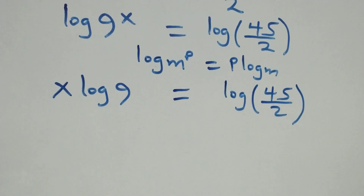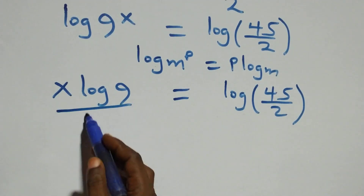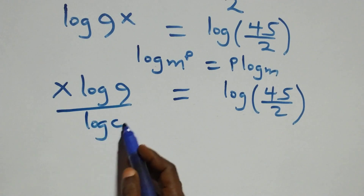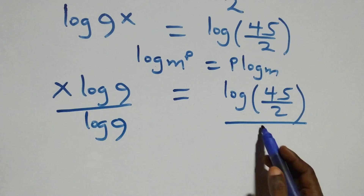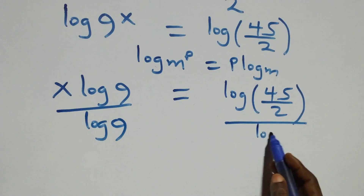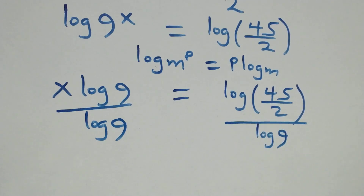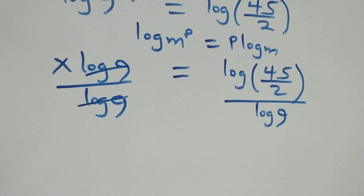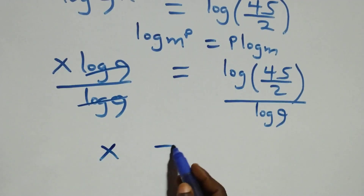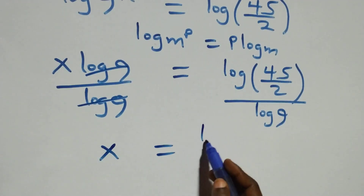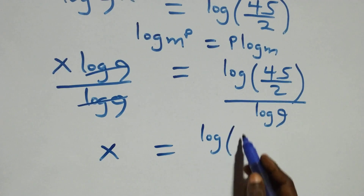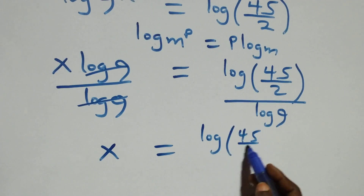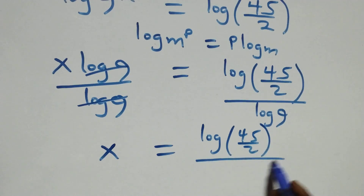The next step here, we divide both sides by log 9. Log 9 cancels each other, and we have x equals to log(45 over 2) all over log 9.